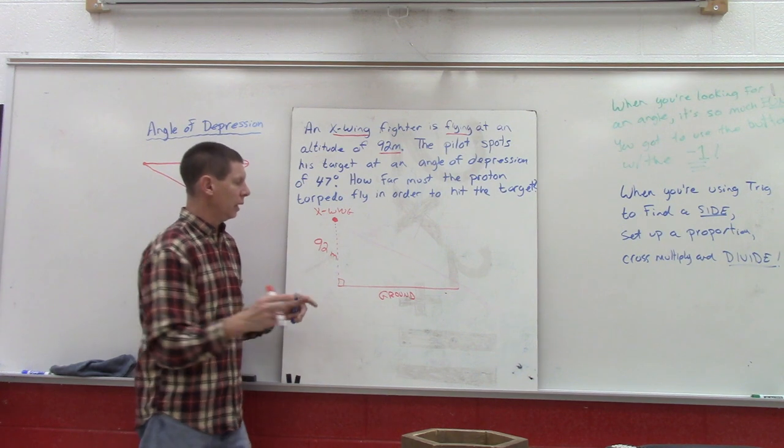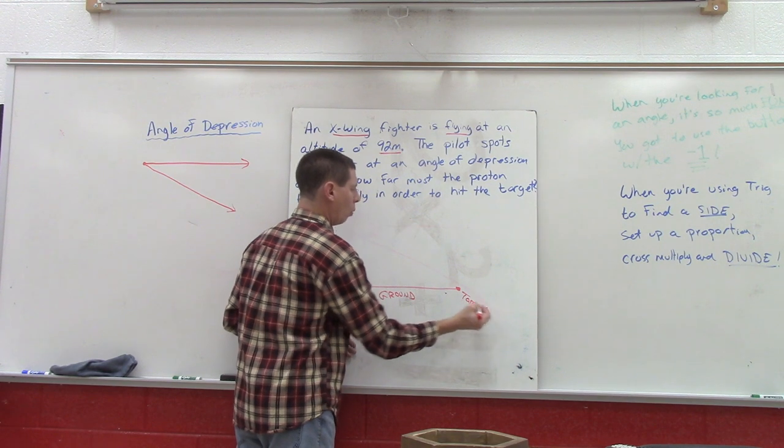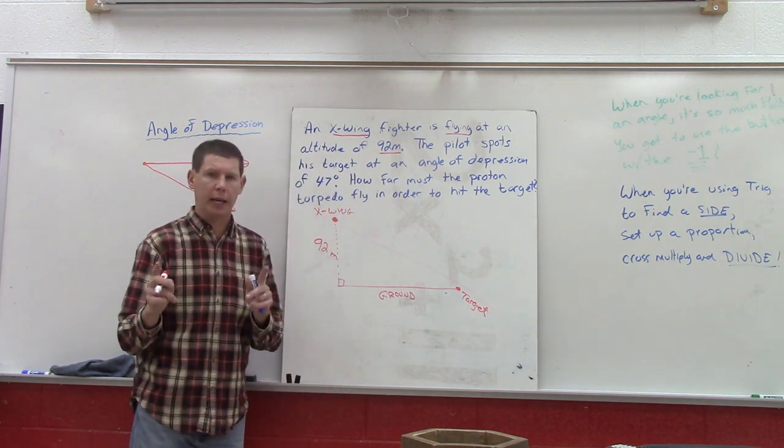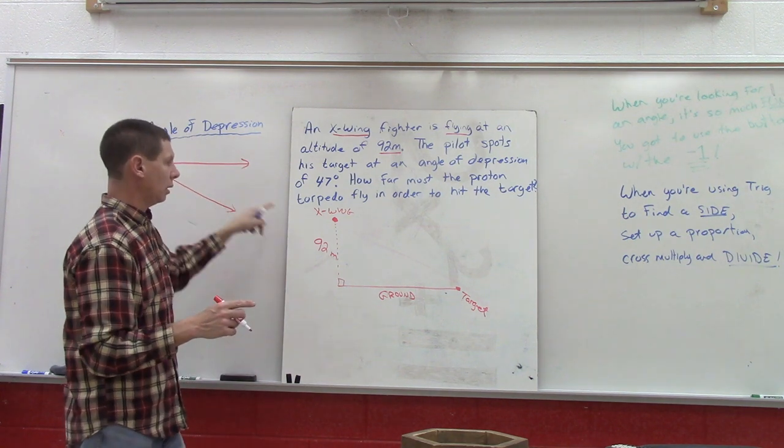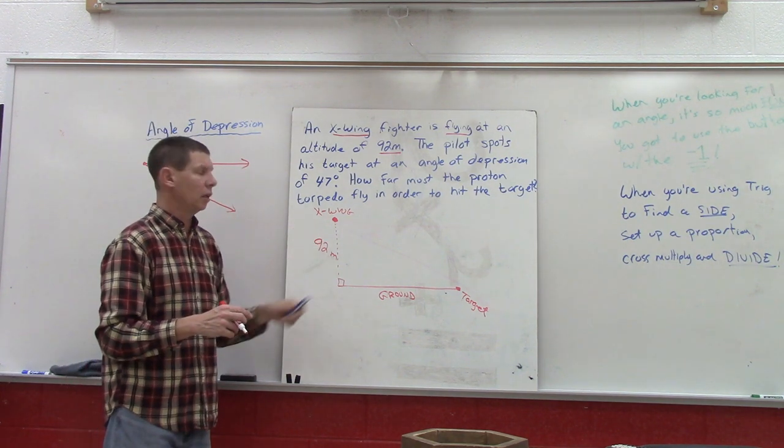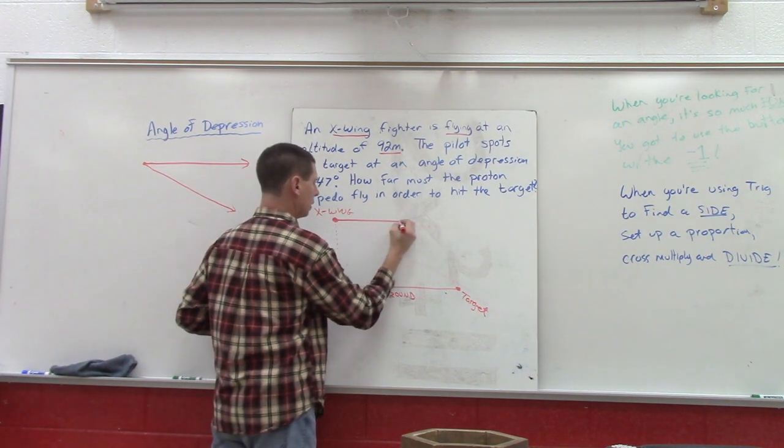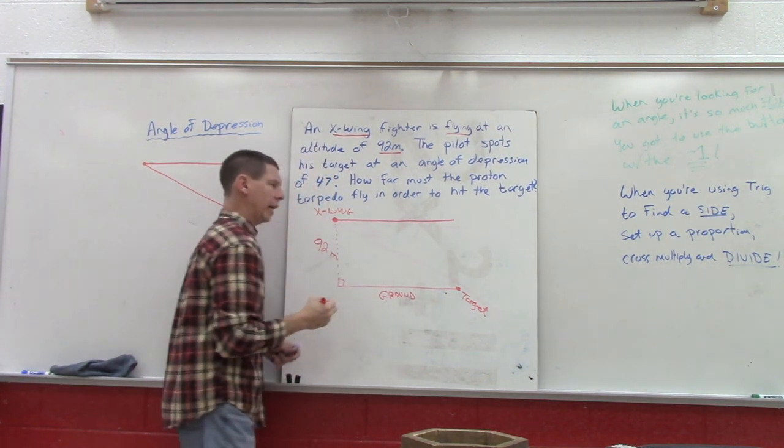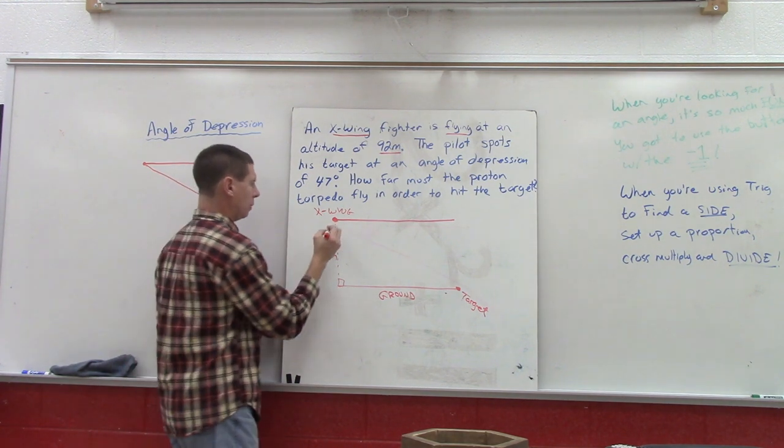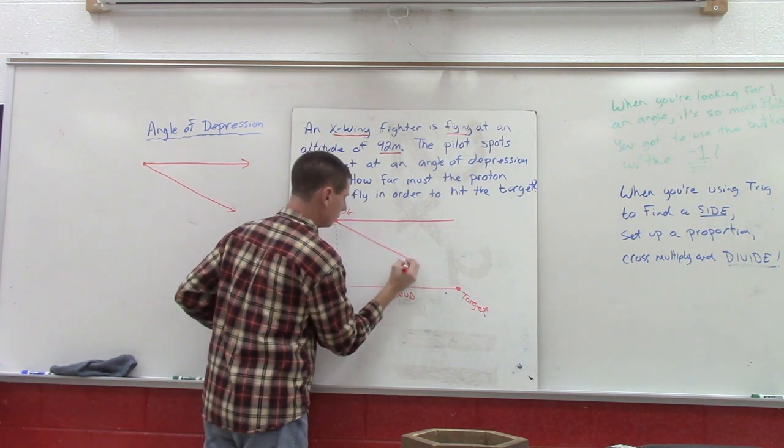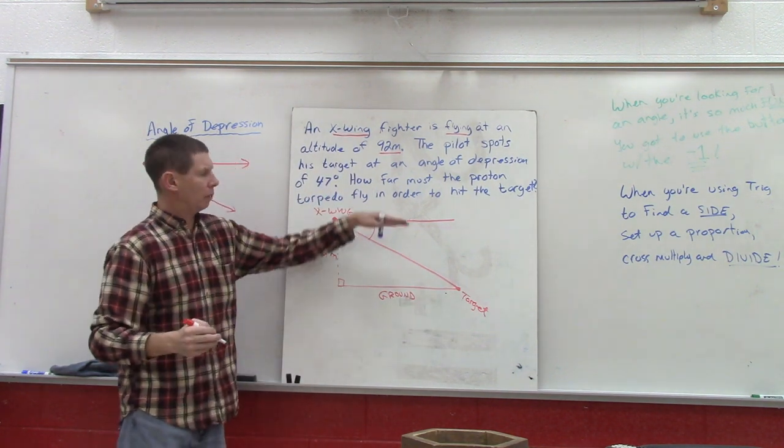I'm going to tell you if this right here is the target, watch carefully what I do. An angle of depression has to have a horizontal line, so we're up here at our X-wing. One of the sides of the angle has to be horizontal, the other has to be the path down. So we know that angle created by the horizontal and the path down is 47 degrees.